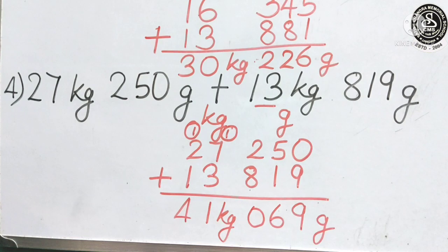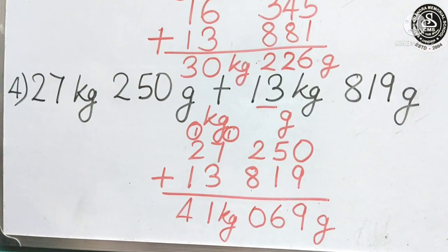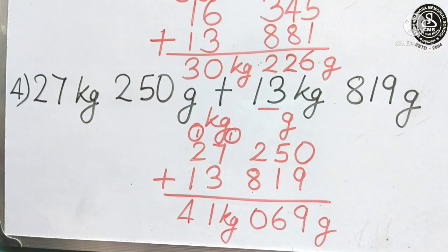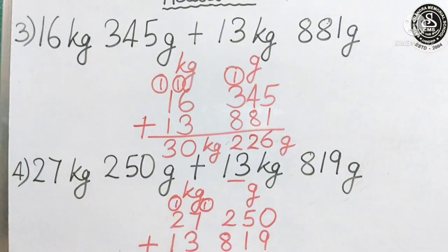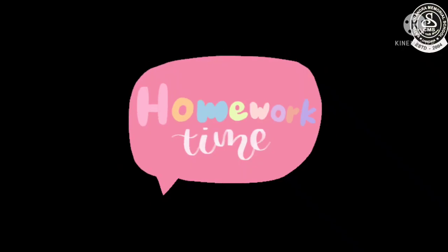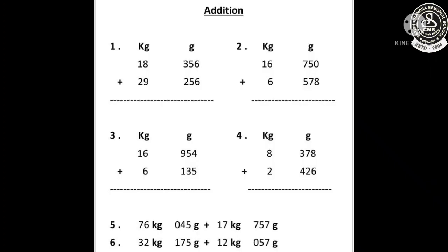Okay, children. So, like this. Some more question has been given as a homework. Do it in your maths copy. Now, children. Note on your homework. Write down all this given question in your maths copy. And solve it. So, children. That's all for today's class.